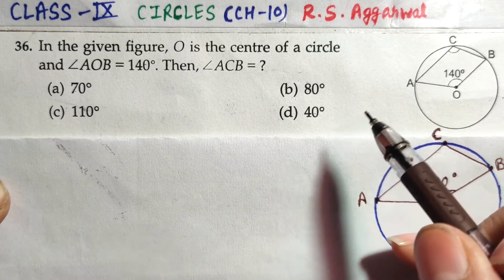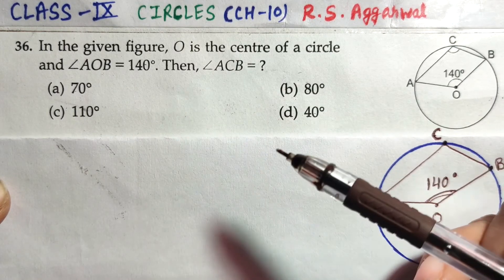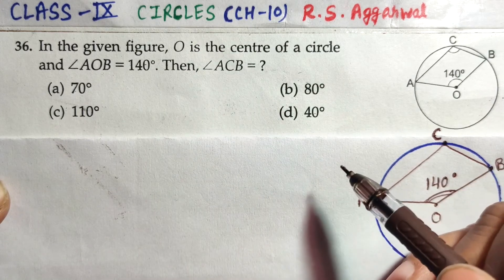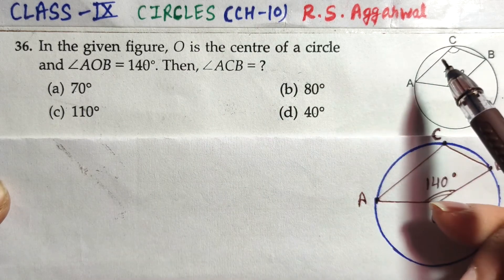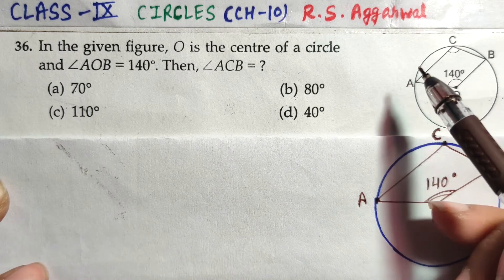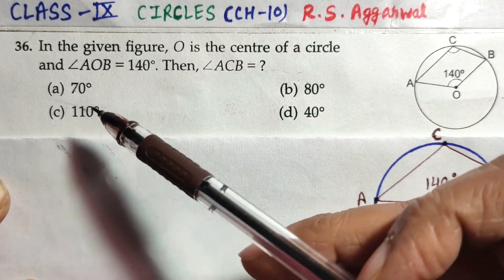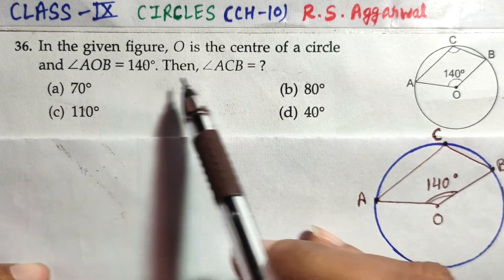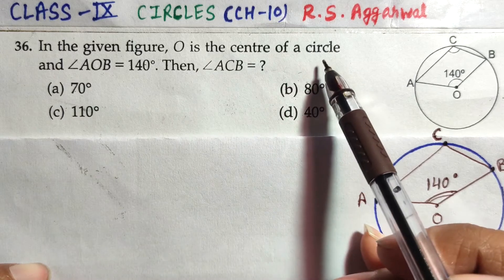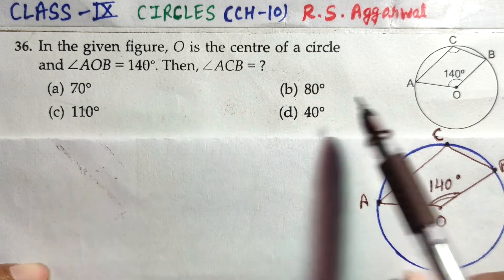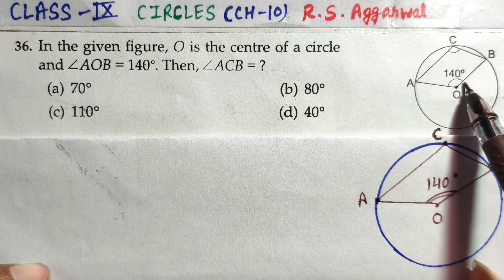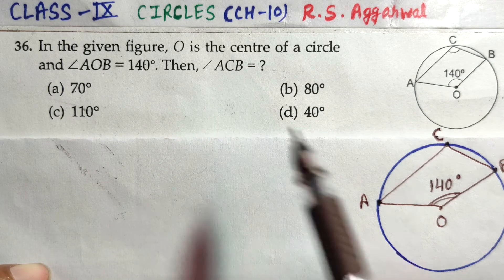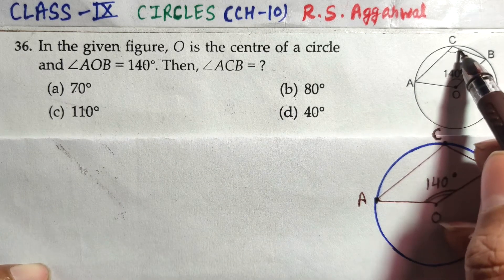Hello everyone, let's continue our discussion on multiple choice questions of Chapter 10 - Circles of Class 9. Questions are taken from the book R.S. Aggarwal. In previous videos we covered up to question number 35. Let's continue from question 36. In this figure, O is the center of the circle, angle AOB is 140 degrees, and we have to find out angle ACB.